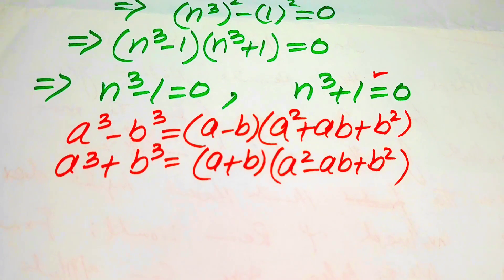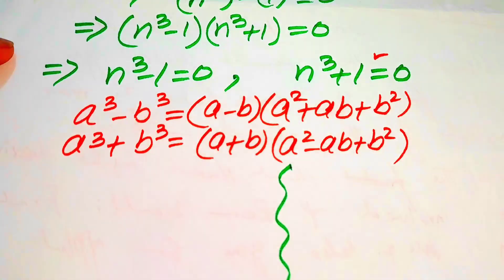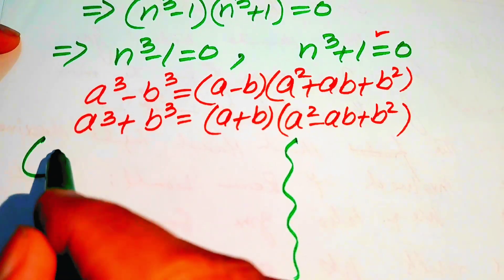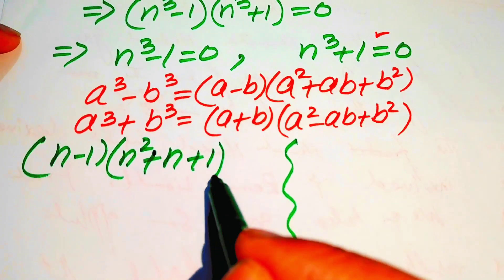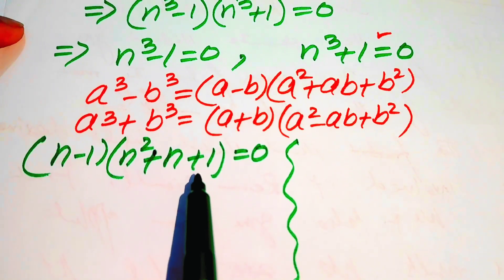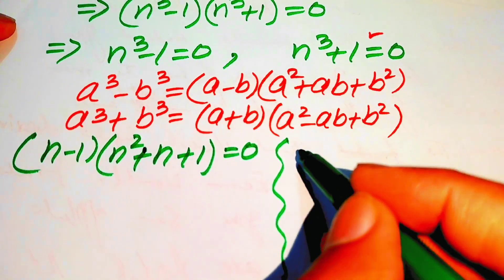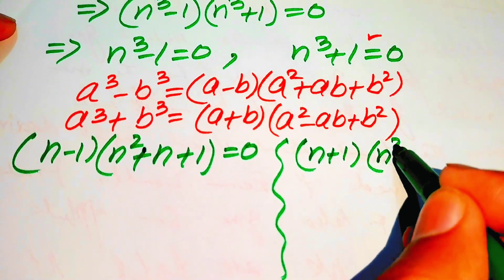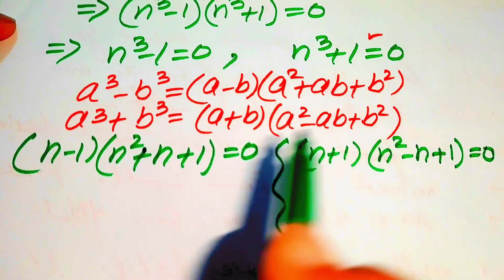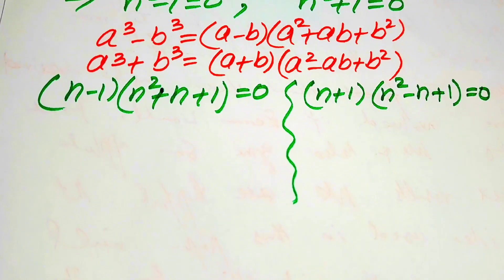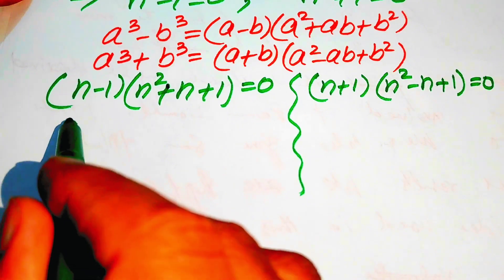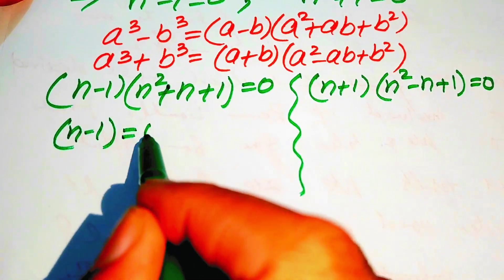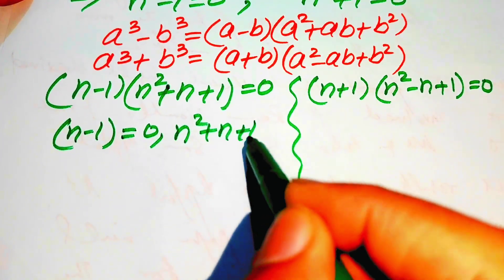We use the cubic factoring formulas: a cubed minus b cubed equals to a minus b times a squared plus ab plus b squared, and a cubed plus b cubed equals to a plus b times a squared minus ab plus b squared. Applying the negative cubic formula to n cubed minus 1 equals 0 gives n minus 1 times n squared plus n plus 1 equals to 0. For n cubed plus 1 equals 0 we get n plus 1 times n squared minus n plus 1 equals to 0. From the first factor we get n minus 1 equals to 0 and n squared plus n plus 1 equals to 0.